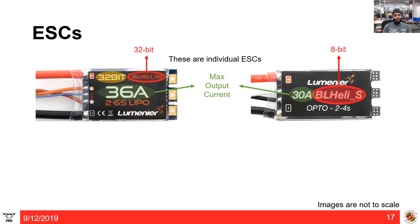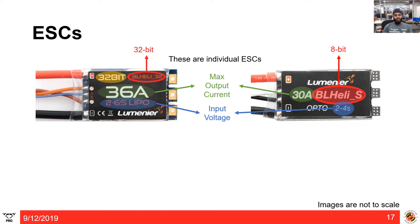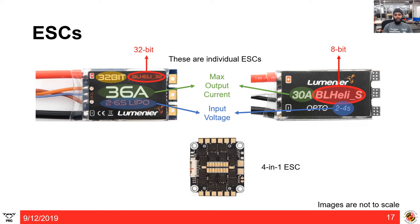ESCs come with an output current rating — in this case 30 amps for the 8-bit ESC. The actual current drawn depends on the motor, propeller, and weight of the quadrotor. Your ESC must be rated above that current draw, or you will fry the ESC. It also has an input voltage range — for the 8-bit version, 2 to 4S — so make sure you use a suitable battery. Using a 1S or 5S battery will either not work or fry the ESC. You can also buy a 4-in-1 ESC, which is smaller and commonly used in nano and micro quadrotors.